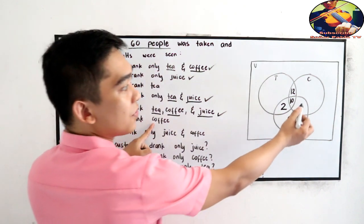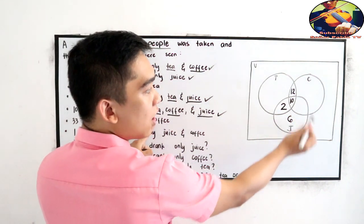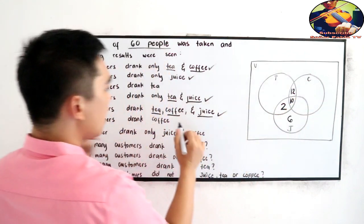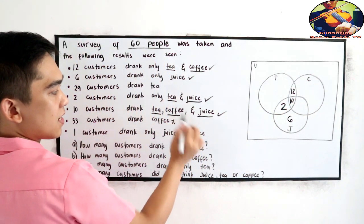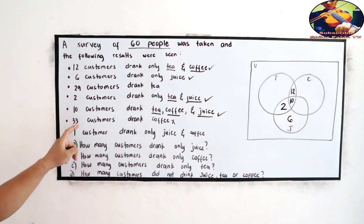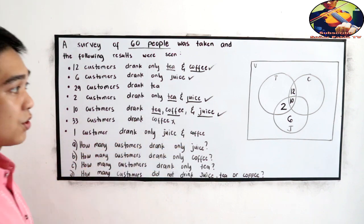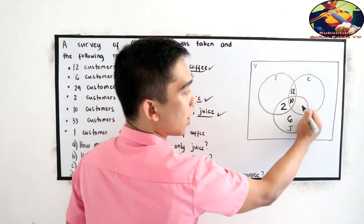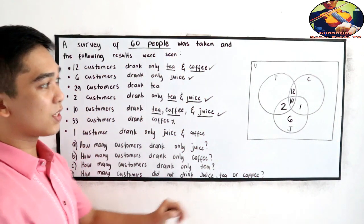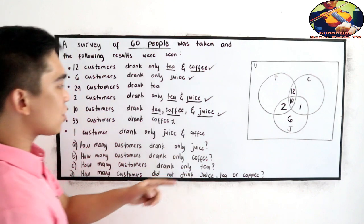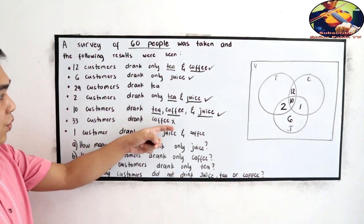So since we don't have given or we don't have yet the intersection of juice and coffee, let us go back in that given later. 1 customer drank only juice and coffee. Juice and coffee, so 1. So since we have enough given for our intersections, let's go back to the 2 other given.